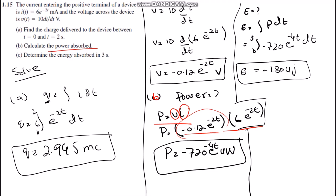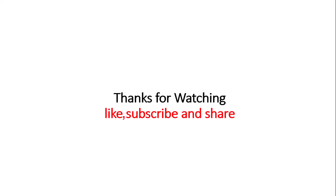In part C, the question demands to find the energy absorbed by the element in three seconds. We have calculated the value of power, so now we simply integrate the power in order to find the value of energy. After integration and substituting the time value of three seconds, we get the value of energy, which equals 180 microjoules.